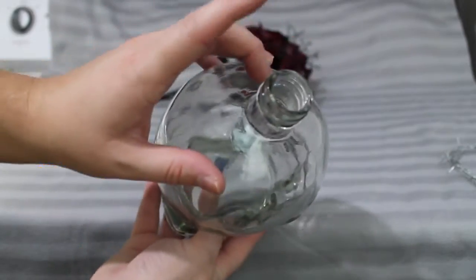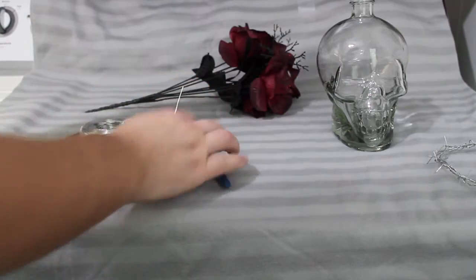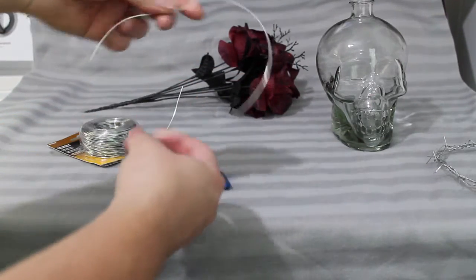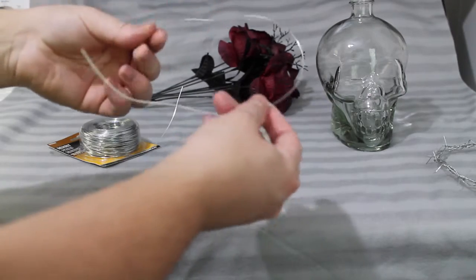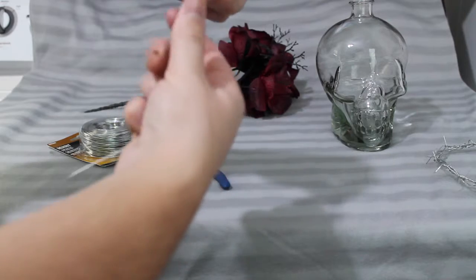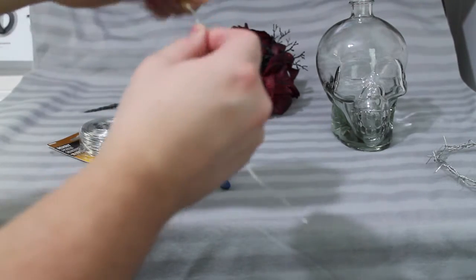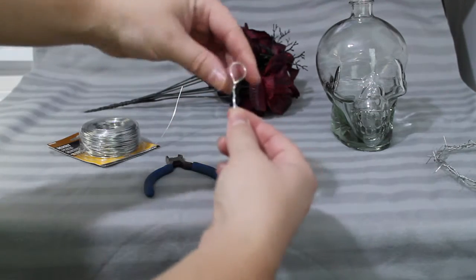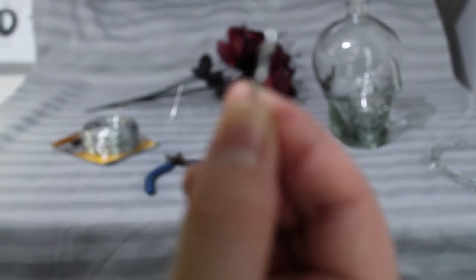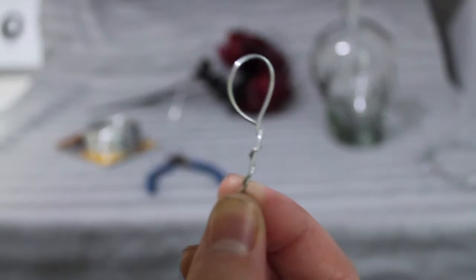The third thing you're gonna need for this project is just a skull vase or skull head of some sort. I got this from Gordman's and it came with this screw-on lid. I just took that out. The first thing we're gonna do, I'm just demonstrating here - I'm getting some wire and you're gonna want a good amount of wire because we're gonna double up on this wire. You're gonna start by twisting the wire all the way through here.